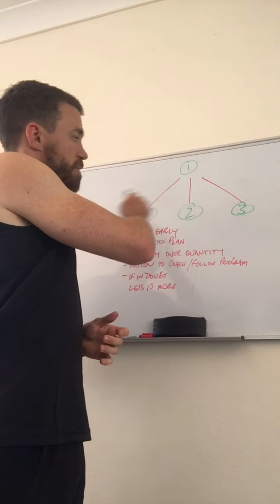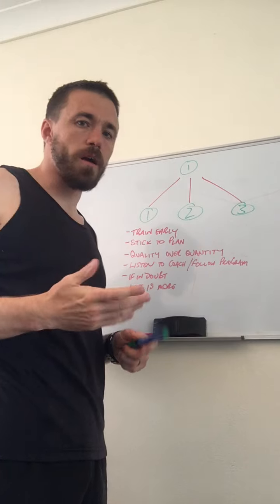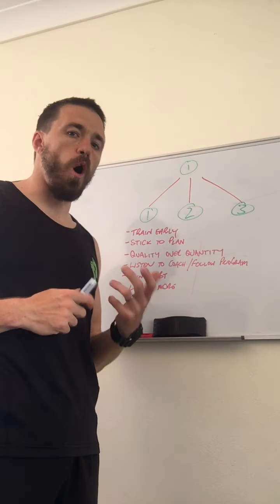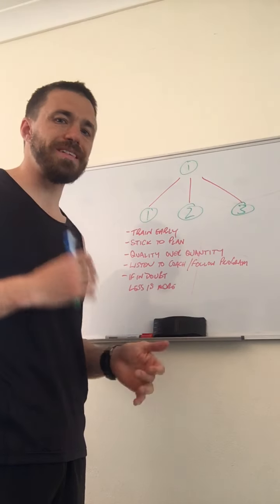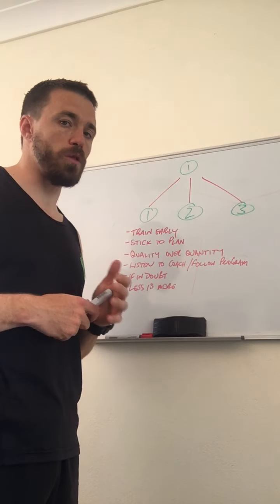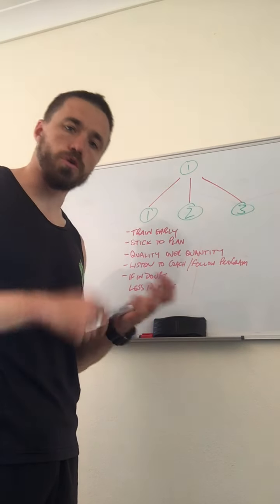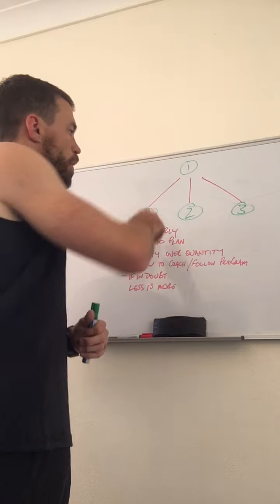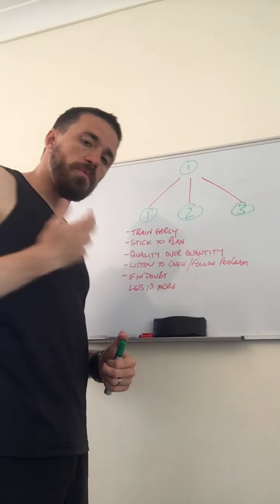Okay the next subcategory or subsection is the 3's. Pick three elements of achieving that goal that you're going to need to work on to achieve it. Now for example's sake we're looking at training, mindset and nutrition. Okay so training, mindset, nutrition, they're your 3's.